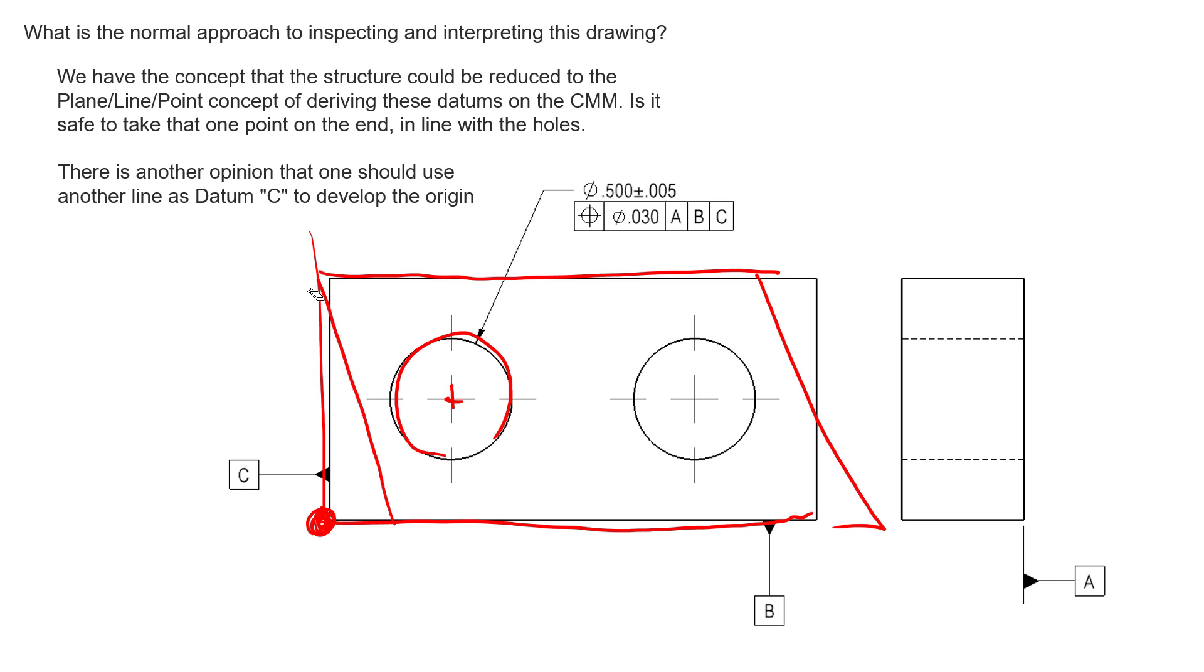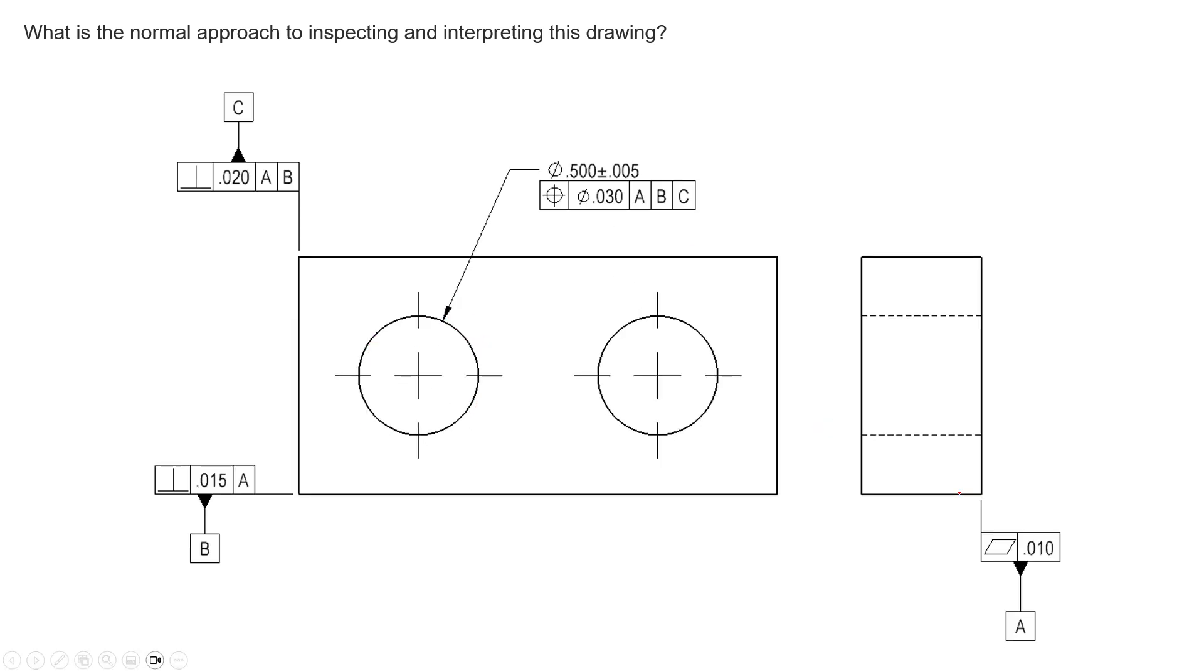Using those physical datum simulators is going to be the best option. As far as restricting that orientation between those datum features, we highly recommend qualifying your primary datum with flatness. Again, that's controlling something that looks like this.